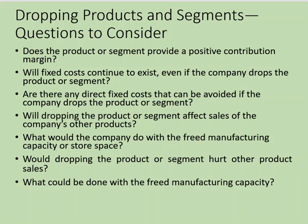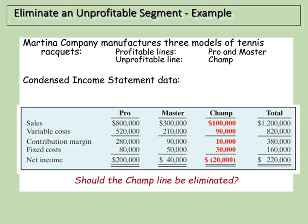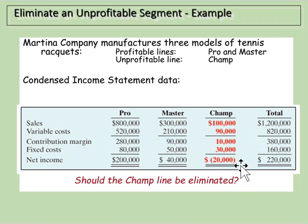Let's look at how managers decide to drop a product using an example — the same approach applies whether dropping a product or a business segment such as a territory or department. We have a company with three models of tennis rackets: the Pro, the Master, and the Champ line. They're trying to figure out whether they should get rid of Champ because it has a negative net income.